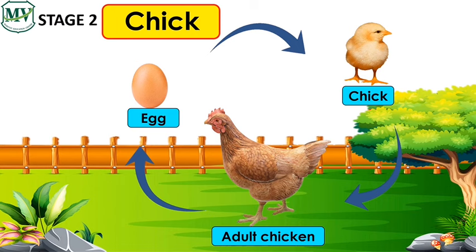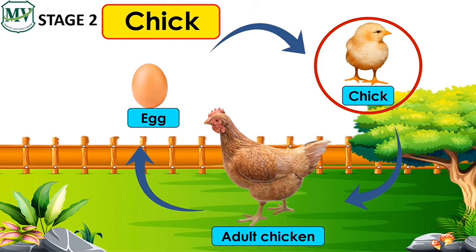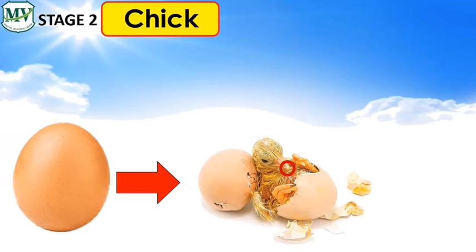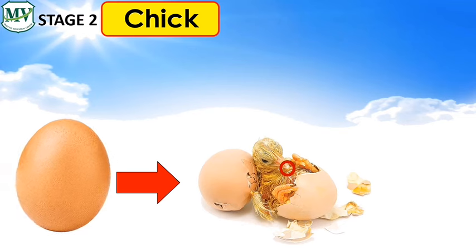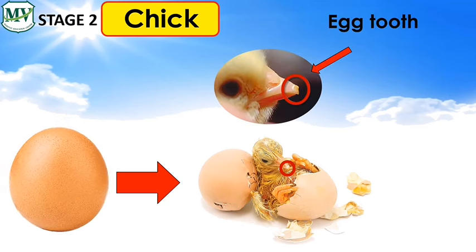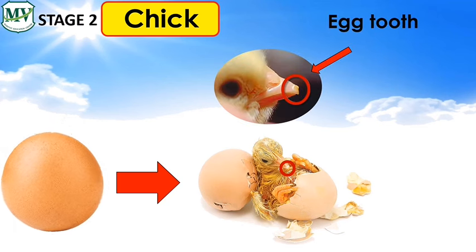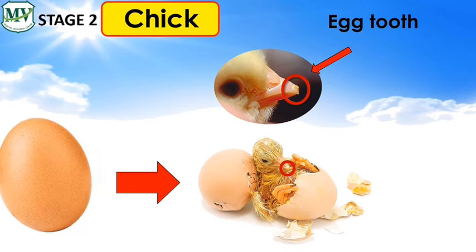The next stage is the chick. Baby chickens are called chicks. After 21 days, it is time to hatch. A chick uses an egg tooth on its beak to break the eggshell. The egg tooth falls off soon after the chick hatches.